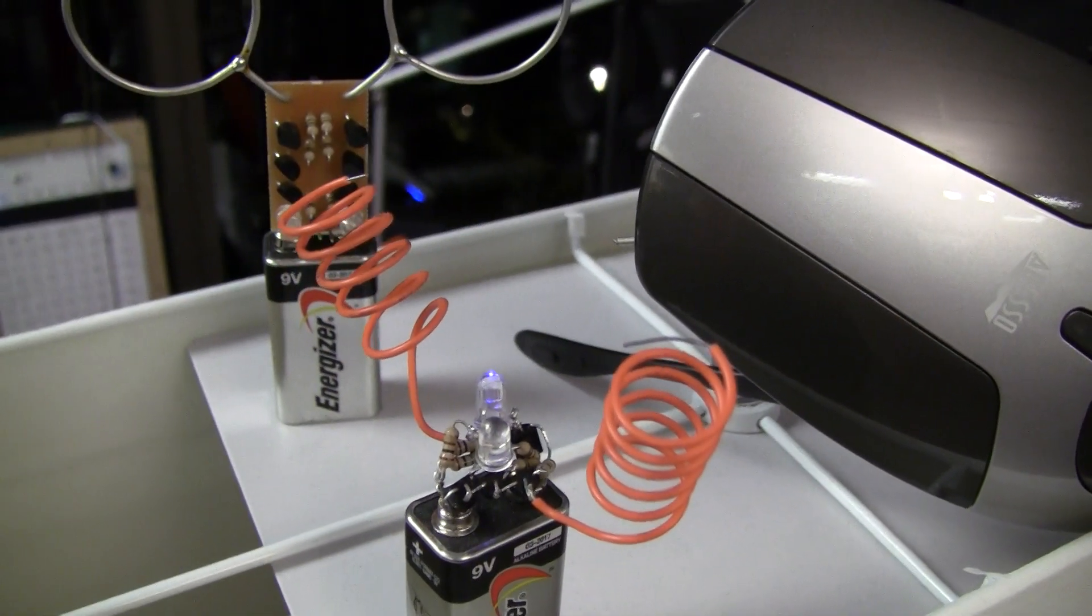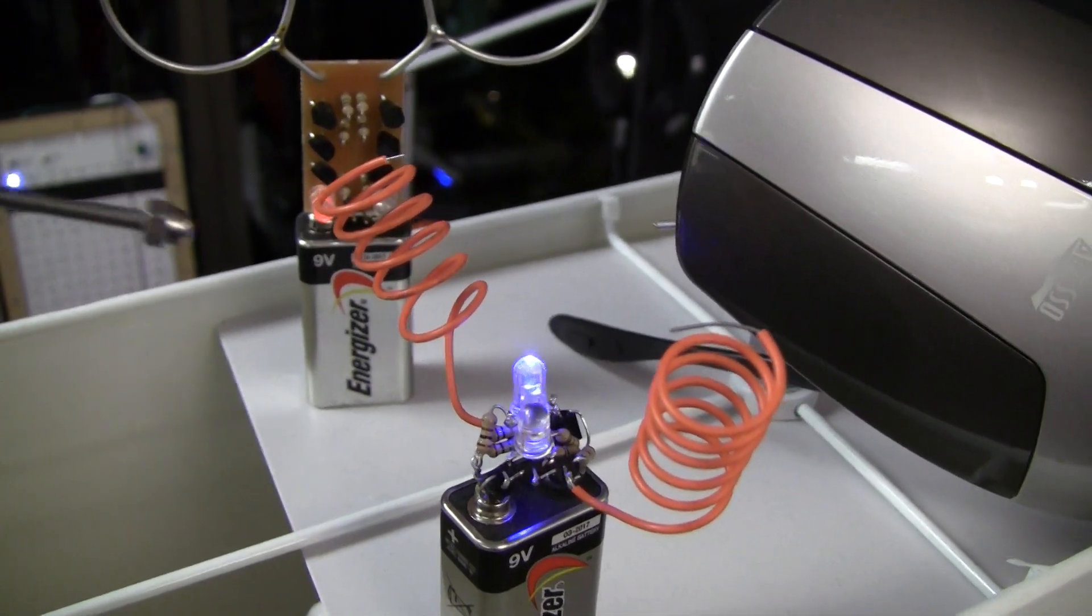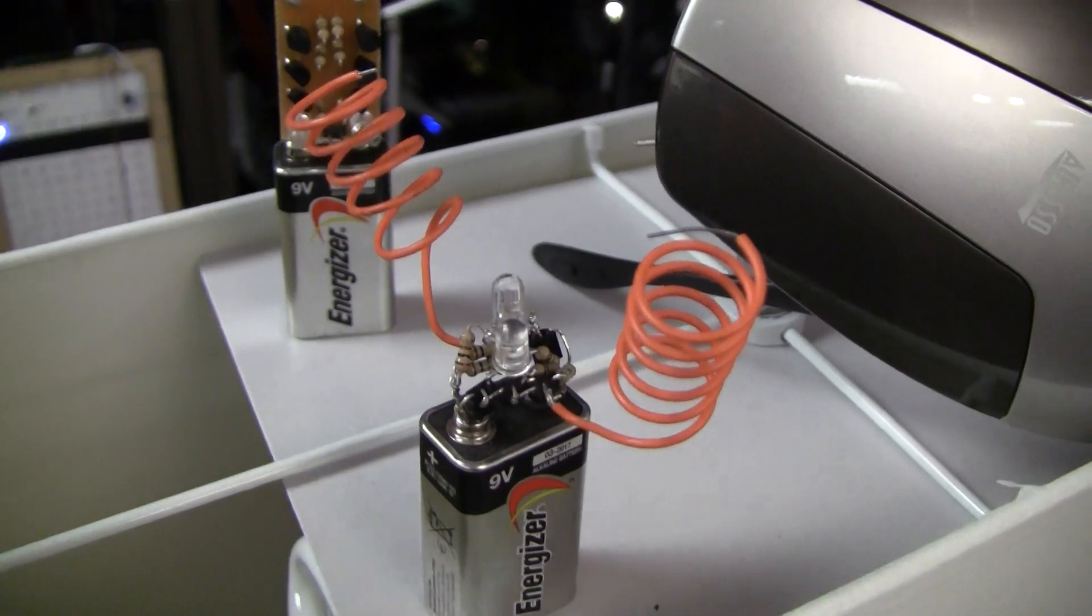For example, over here, once I let the charge on my body bleed off a little bit, if I hold one end of it and I approach the electroscope, you can see the blue one lights up.